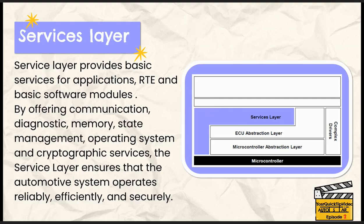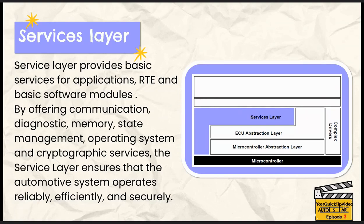The services layer is the top part of the basic software. It provides essential services like operating system, network communication, memory management, and diagnostics. Think of it as the manager of a smart home system — it's the one who ensures everything runs correctly, handling everything from diagnostics to managing memory to communication between different systems. To not confuse the services layer with the ECU abstraction layer: the ECU abstraction layer is the specialized technician ensuring all hardware components are in synchronization, while the services layer is the manager of the entire system. Don't confuse hardware component management with system management.